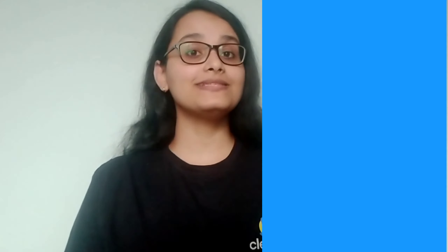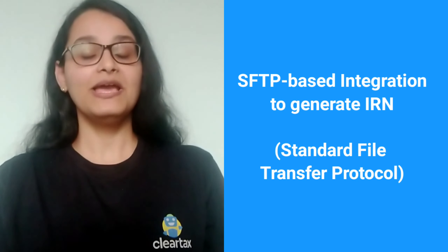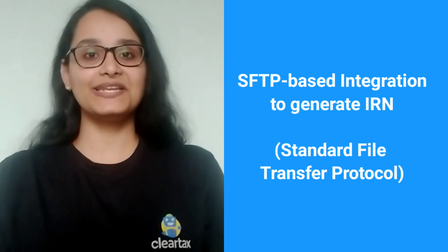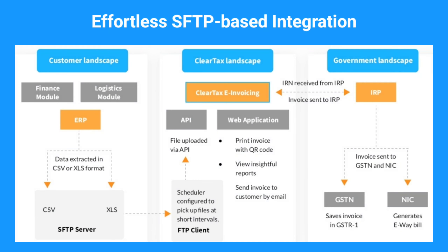Next up, ASP-GSPs such as ClearTax provide another affordable and convenient option for integration known as standard file transfer protocol-based integration, i.e. SFTP-based integration. This form of integration allows the invoice data to be picked up or extracted from the ERP system periodically. Invoice data is temporarily stored on the SFTP server to be later sent to the IRP as per a pre-adjusted schedule. Thereafter, the IRN is generated from the IRP and pulled back into the ERP system.